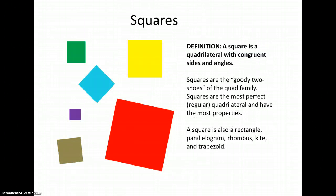A square is a quadrilateral with congruent sides and angles. So we know a square is a polygon with four sides, and those sides are all exactly the same measure. Those angles, four angles, are also all the same measure.